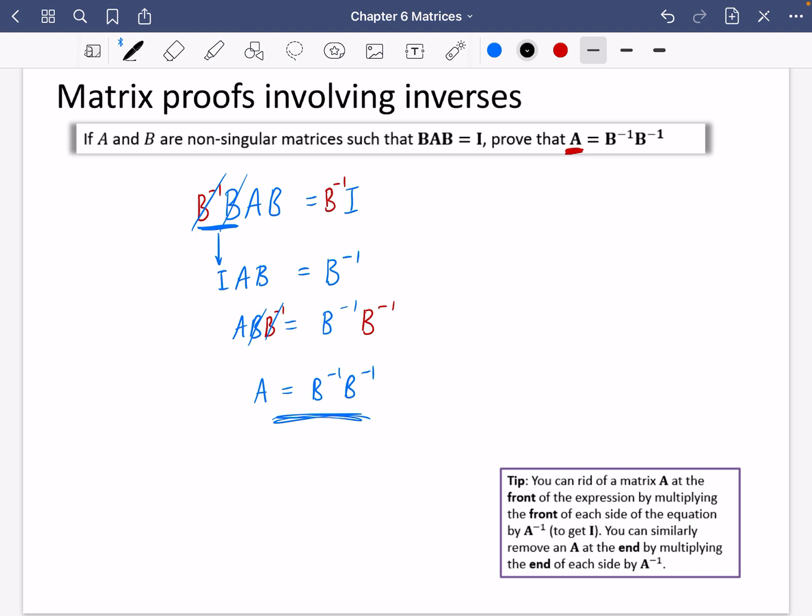Maybe if I was going to write this down in the exam, I would probably write that BAB equals I. So I would then write down that B inverse BAB equals B inverse I. Then I would write down on the next line, I can just say that they cancel like this. And then I would write down AB equals B inverse B inverse. They cancel. So you just get A equals B inverse B inverse. So the black part is probably how I would write the proof down here.